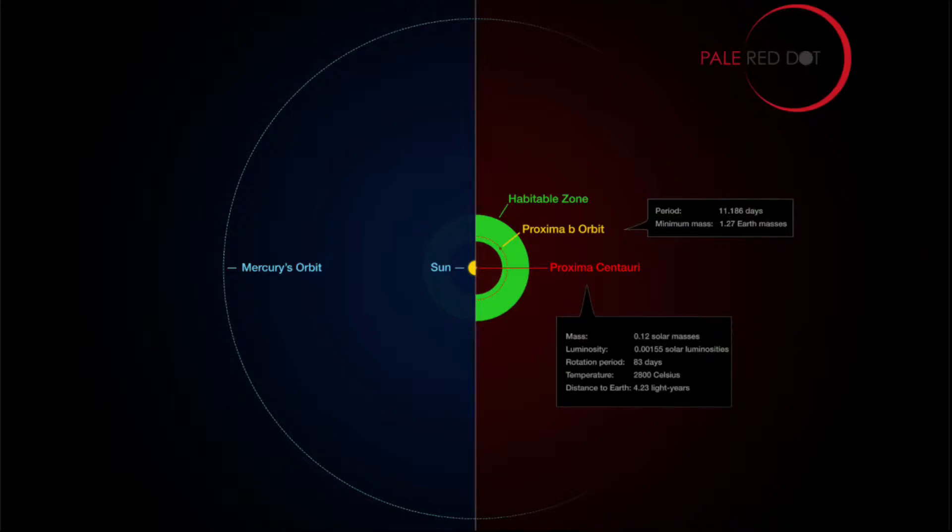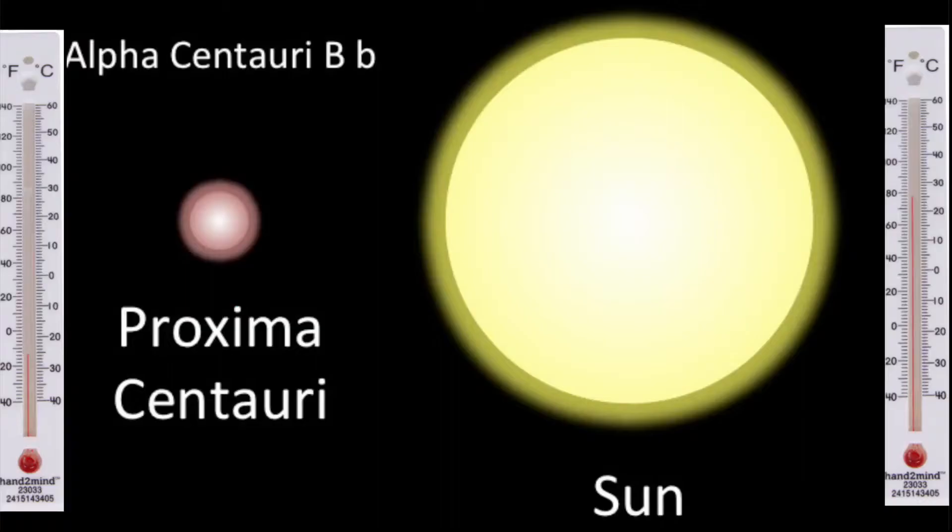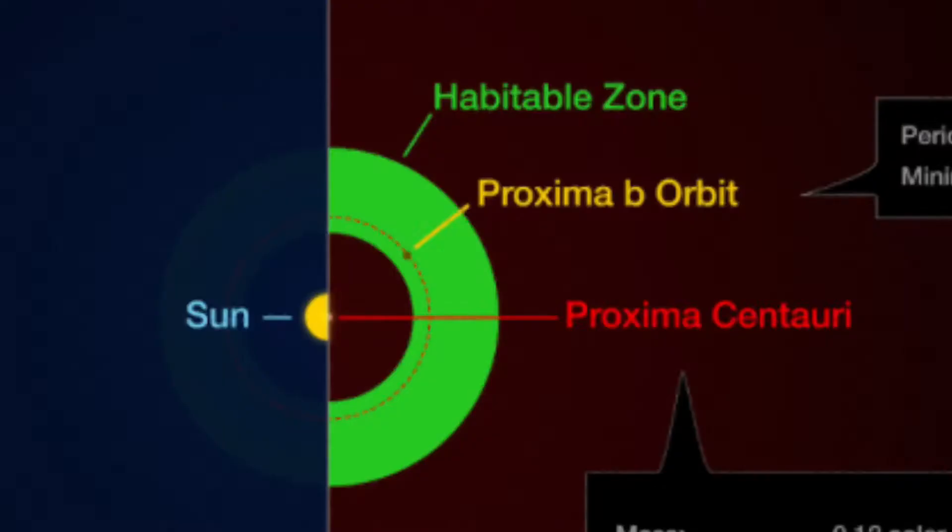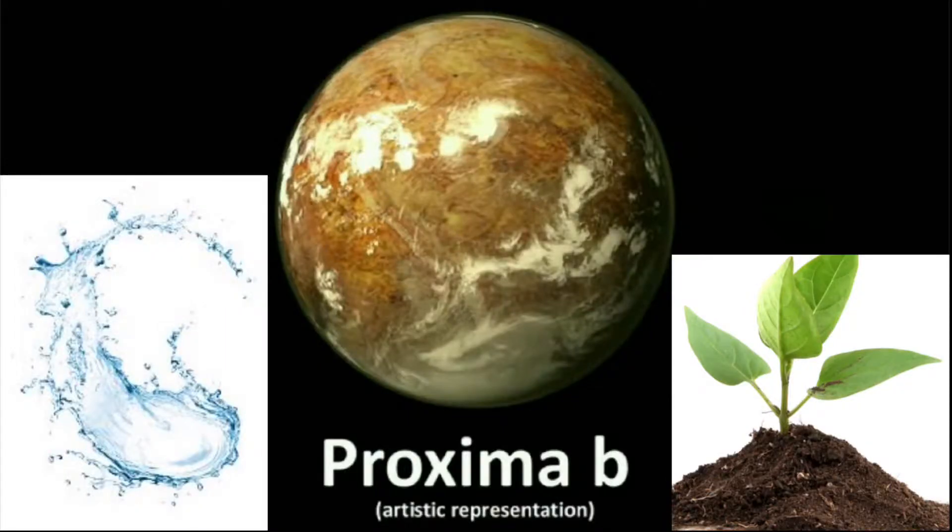Wouldn't it get super hot? No. This is because Proxima Centauri is much smaller than the Sun. So much colder. Still hot though, but relatively colder. Proxima Centauri B is in the habitable zone of Proxima Centauri. It could have liquid water and support life, but we won't know until we get there.